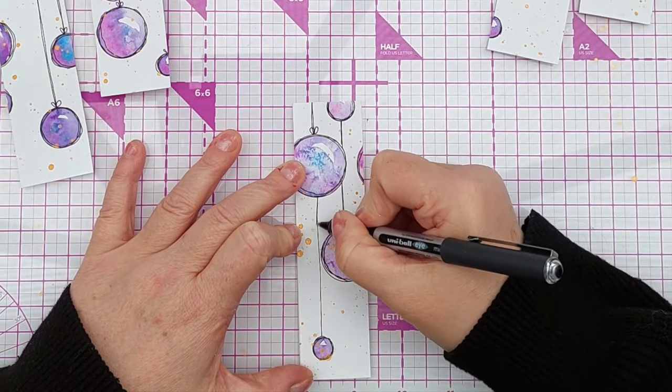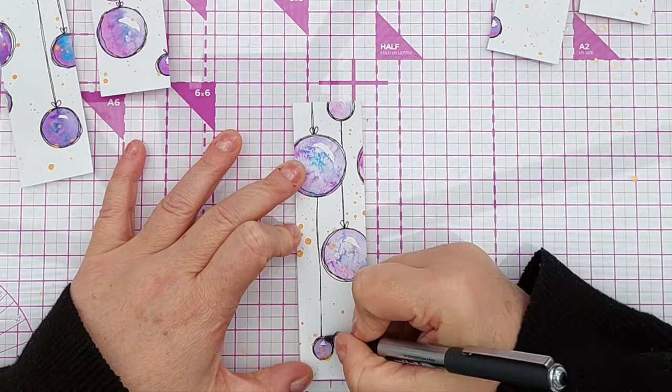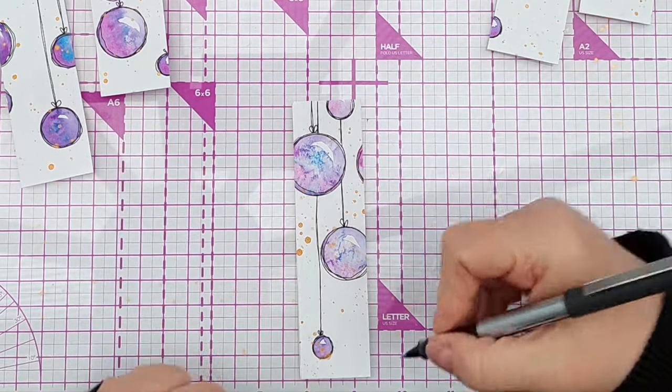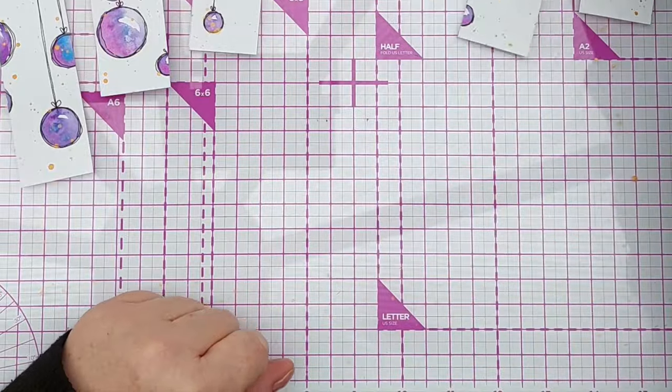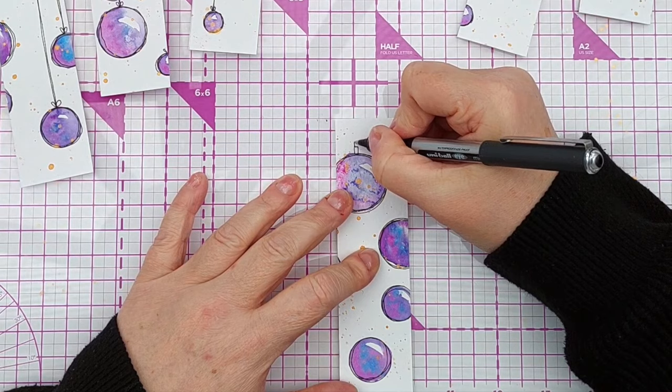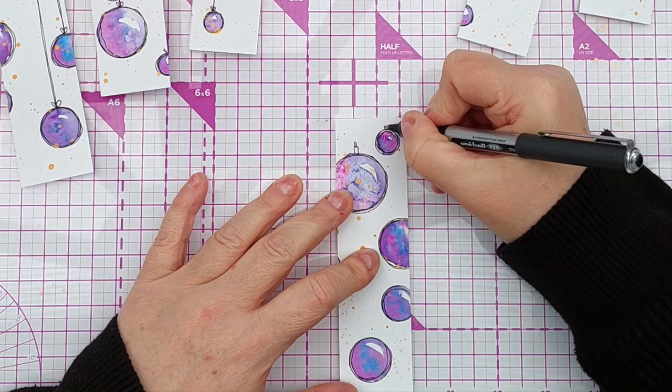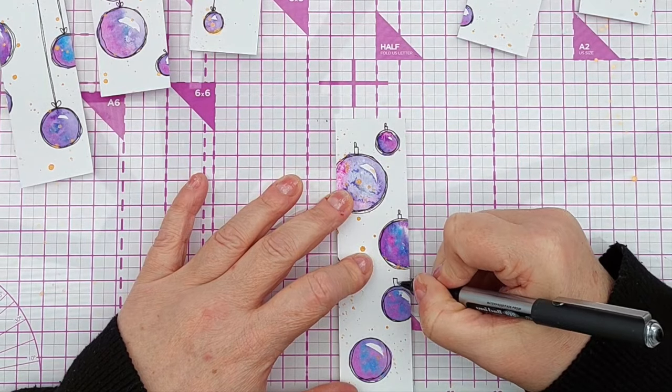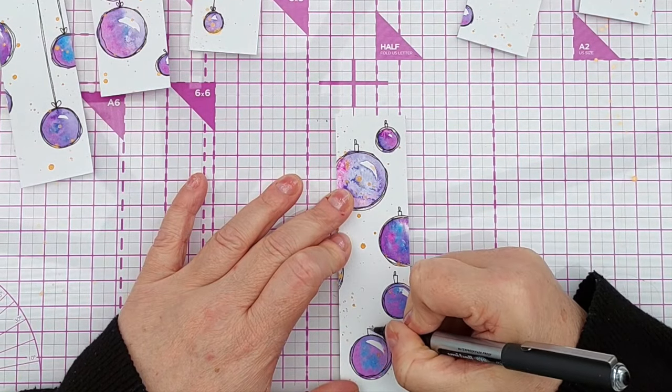You can, if you want, draw the little, I don't know what they call them, the caps that sit on top of a bauble where you put the string through. I'll do it on this one. So something like that with a circle. You could color that in gold or leave it white.